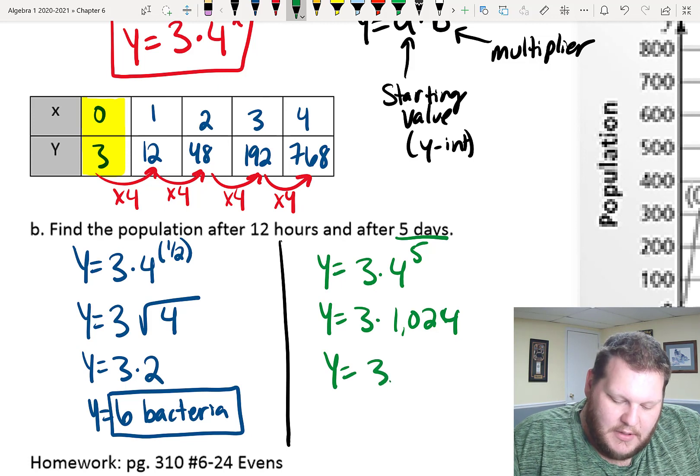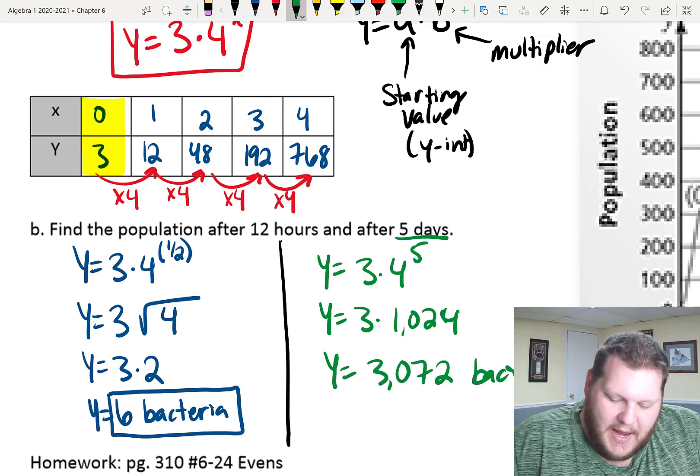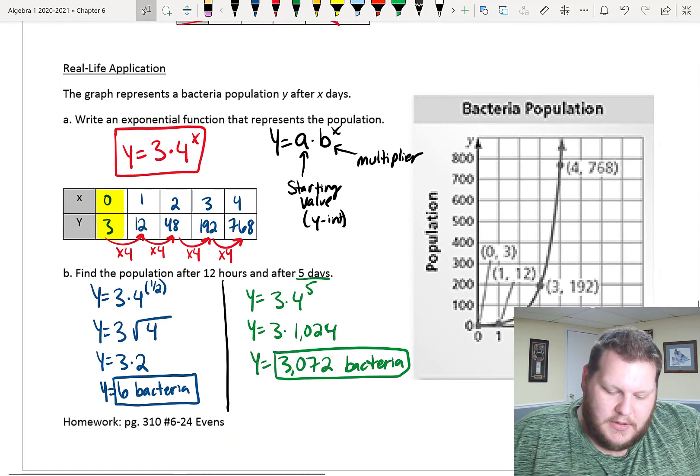So, when I multiply by 3, I get 3,072 bacteria. 3,072 bacteria. All right. That is all I got for us for today.